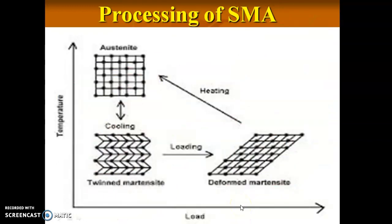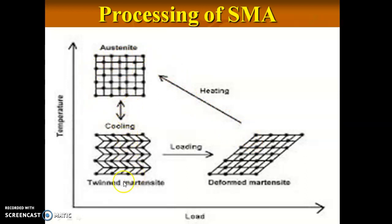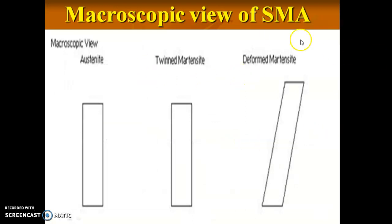This is the processing of a shape memory alloy, where we apply heat as well as cooling. The deformed martensite, when heated, transitions to an austenite state. When subjected to cooling again, it comes back to a twinned martensite state. The material returns to its original shape or size after heating and cooling. This is also shown in the microscopic view of a shape memory alloy.